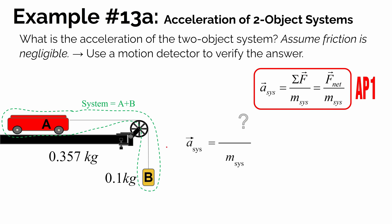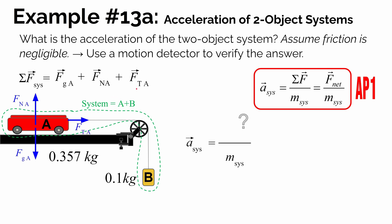To figure out the sum of the forces on the system, let's think through all the forces on each part of the system and see if anything cancels out. For object A: we know there's a gravitational force pulling it straight down, a normal force perpendicular to the surface pushing back up, and while the system is accelerating, there's tension in the string pulling to the right on cart A.